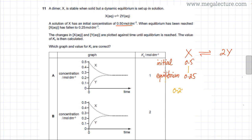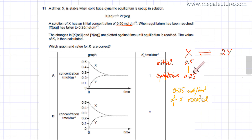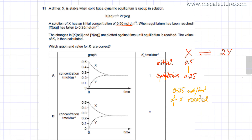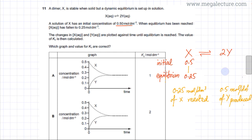There's a difference of 0.25 mol per dm³ which is now missing, meaning 0.25 mol per dm³ of X has reacted. Since 1X produces 2Y, using this 1:2 ratio, if 0.25 reacted, then 0.5 mol per dm³ of Y would be produced. Initially Y was 0, so at equilibrium the concentration of Y is 0.5 mol per dm³.